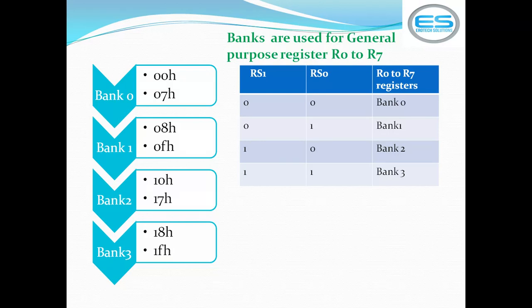The registers can use any of the four banks, but it depends on the register selection bits RS0 and RS1 from the PSW register, which decides which bank is used. If RS1 and RS0 are both 0, the registers use bank 0. If they are 01, bank 1 is used. RS1:RS0 = 10 selects bank 2, and 11 selects bank 3. The registers use one complete bank to store their data.